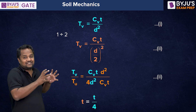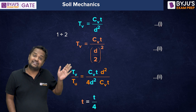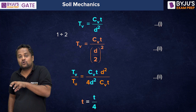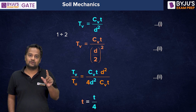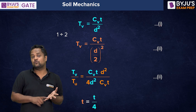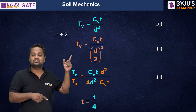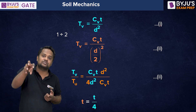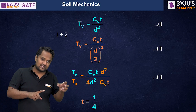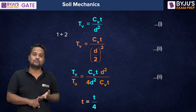That means the formula — that in double drainage time required is one fourth of single drainage — is only valid when: you are considering the same soil (so C_V is the same), the same thickness (so D is the same), and the same degree of consolidation — for example, 70% consolidation for both single drainage and double drainage — so that T_V and T_V cancel. Three conditions are required: same soil, same thickness, and same degree of consolidation.